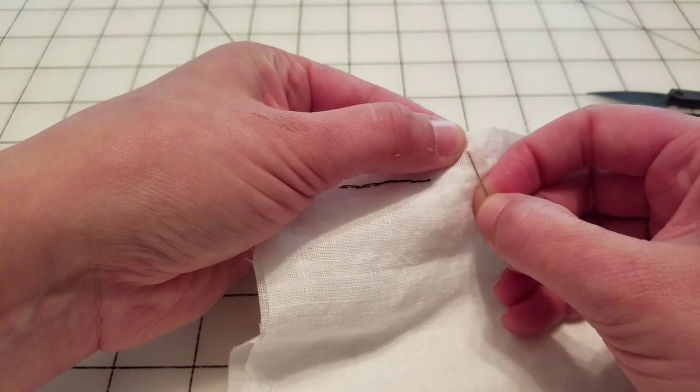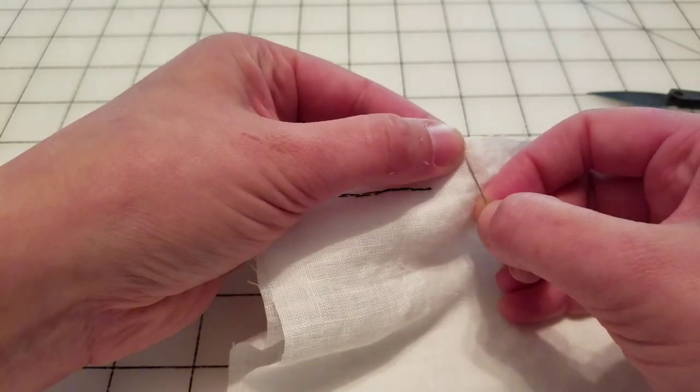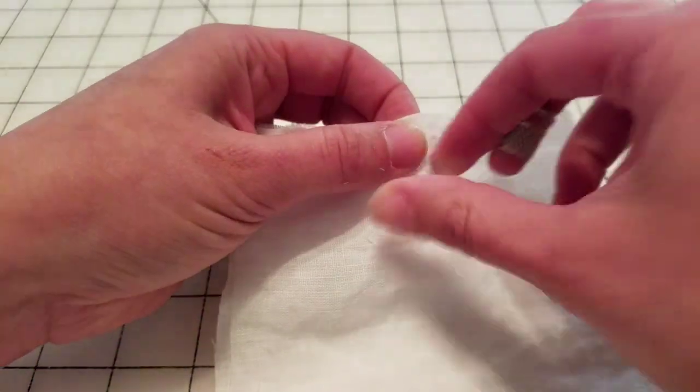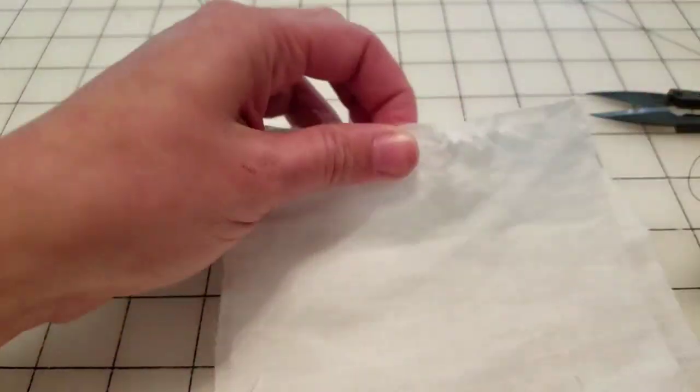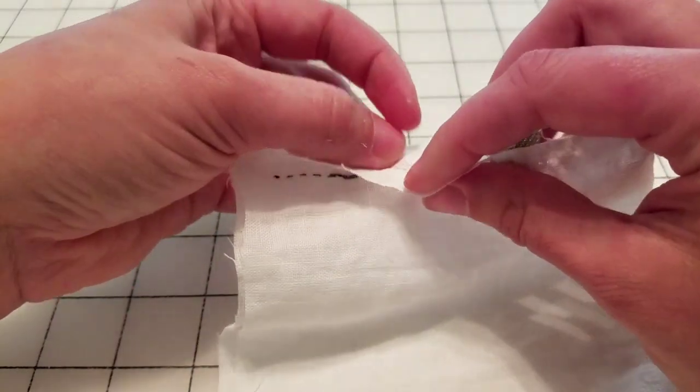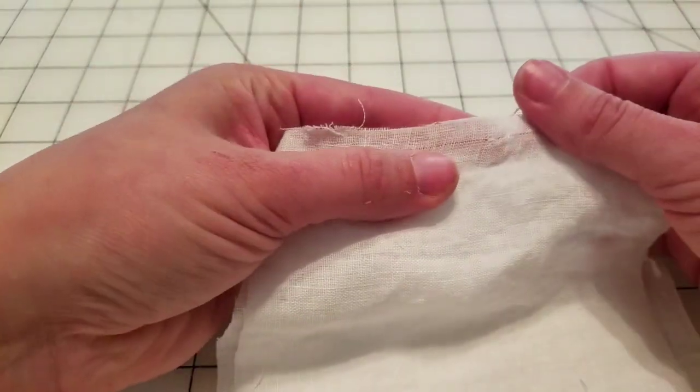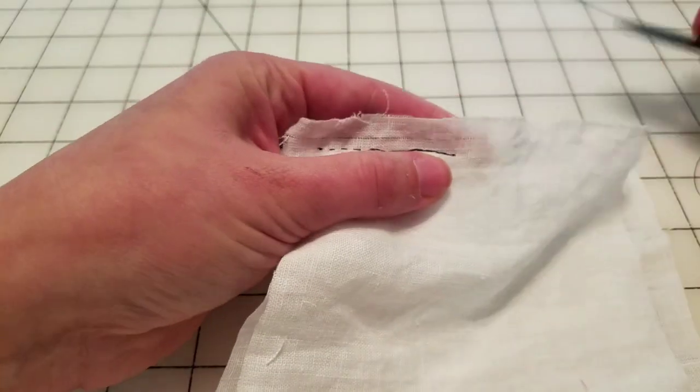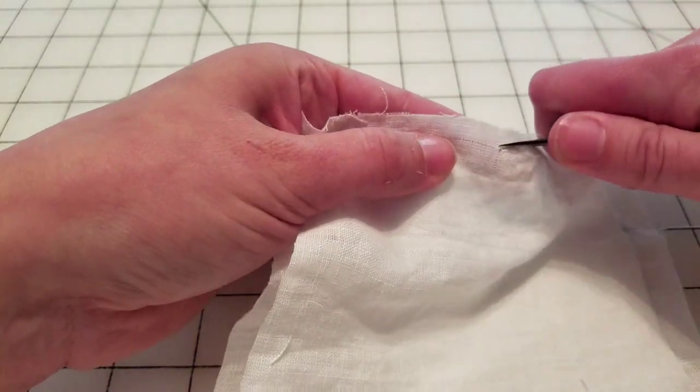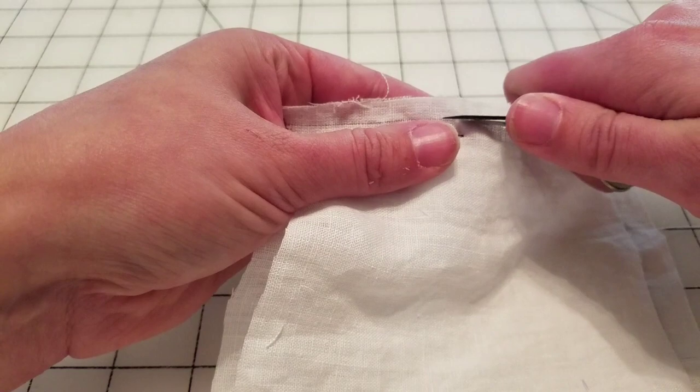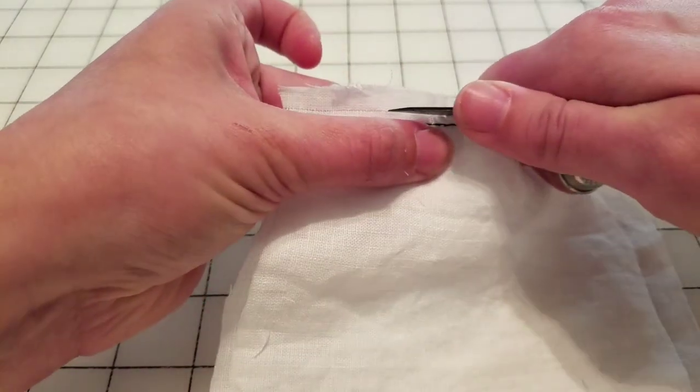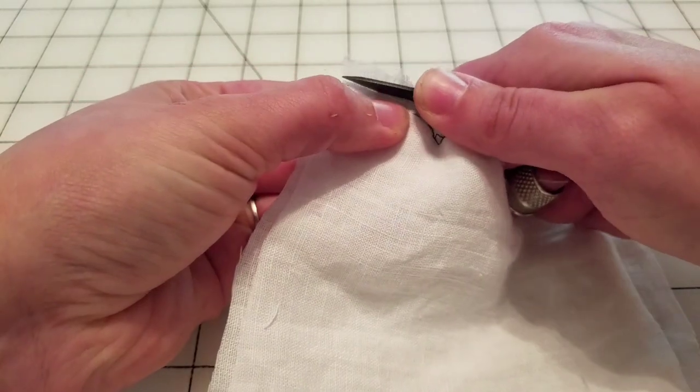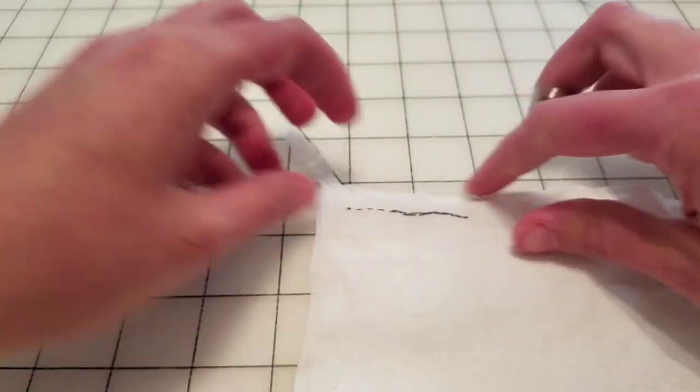I'm going to pull out half of the seam allowance by pulling one thread out of this linen. That makes a nice little guideline. You can see right there where I pulled that thread out. Makes it easy to snip a straight line. I'm just using my thread snips because it's so easy to keep it straight right there.